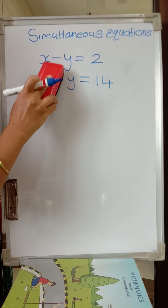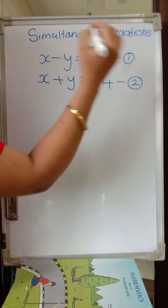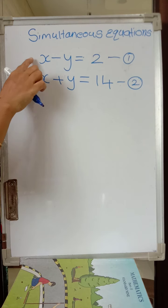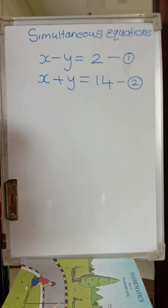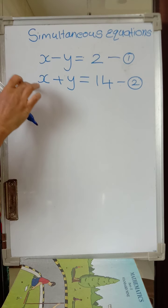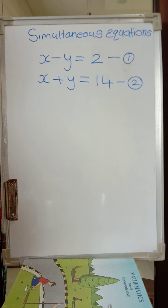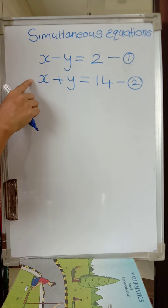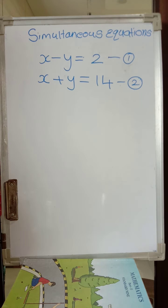This is equation 1 and this is equation 2. When we consider two such linear equations at a time, then we call them simultaneous equations — both are having the same variables and we are considering both of them at a time. So when we have two linear equations in two variables considered at the same time, we call them simultaneous equations.